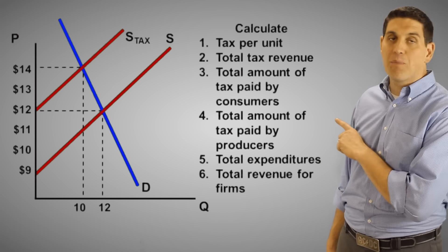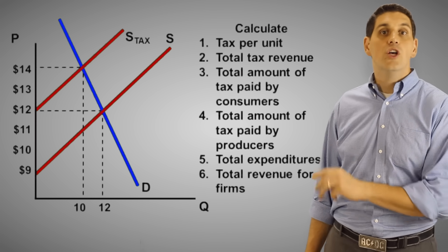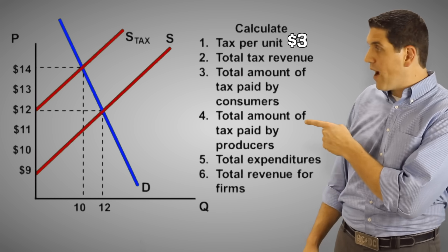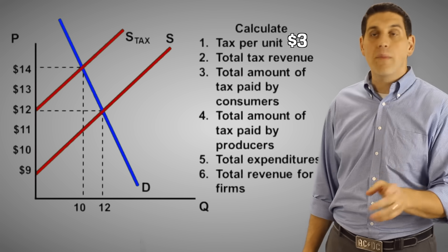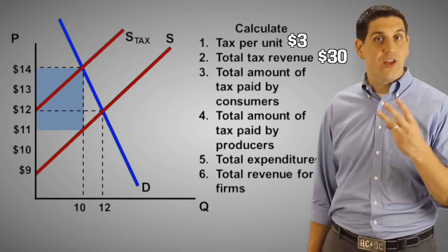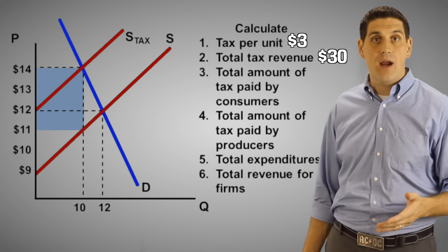The first question is the tax per unit. To figure it out, it's the vertical distance between the supply curves. So this is a $3 tax. Don't assume it's a $2 tax because that's what happened to price. Price went up $2. Remember consumers and producers share this tax. The tax revenue is $30. It's a $3 tax per unit times the 10 quantity, which is that box right there.